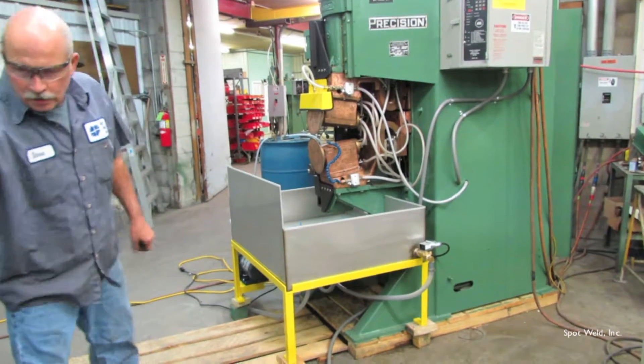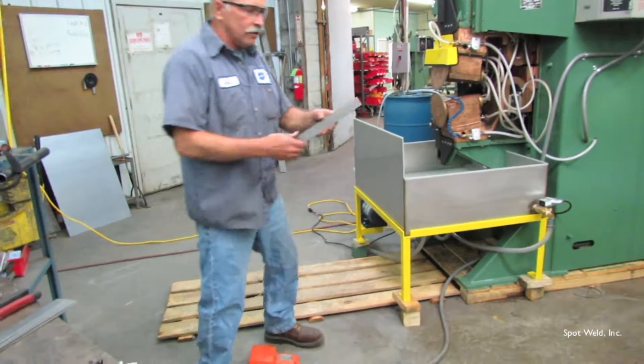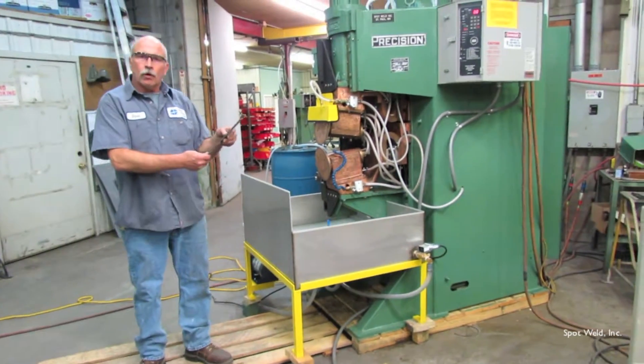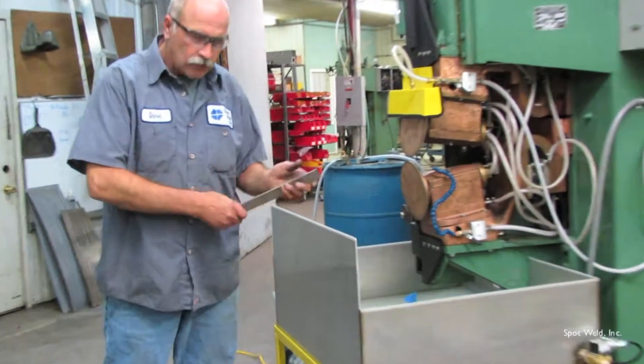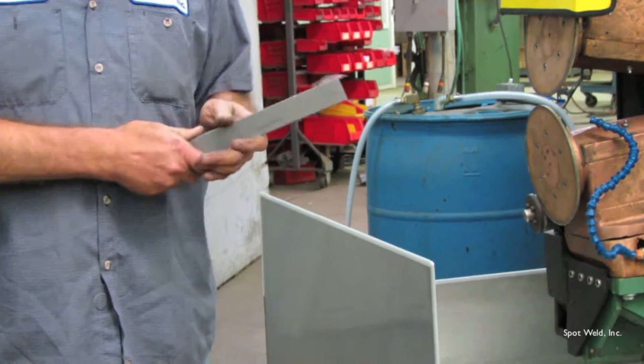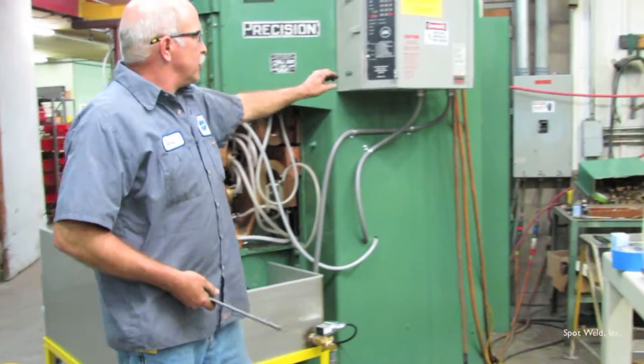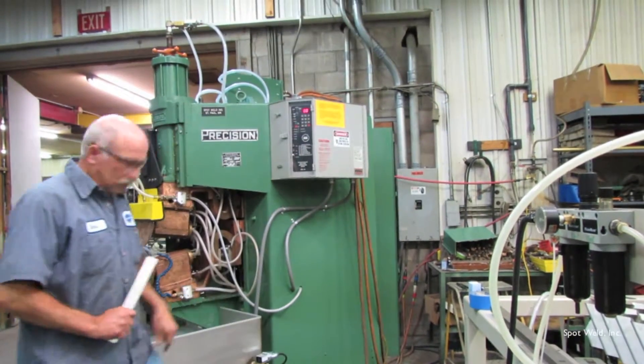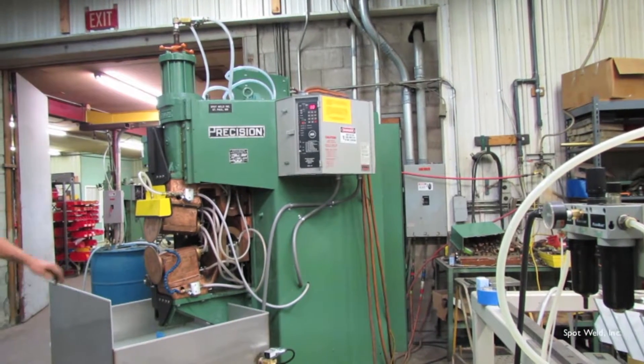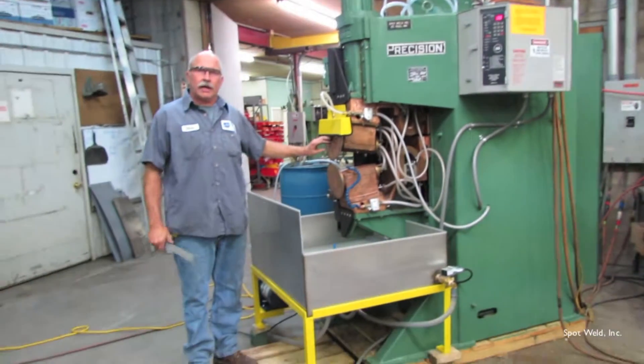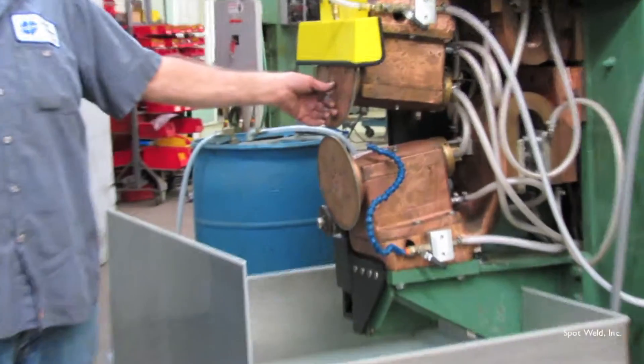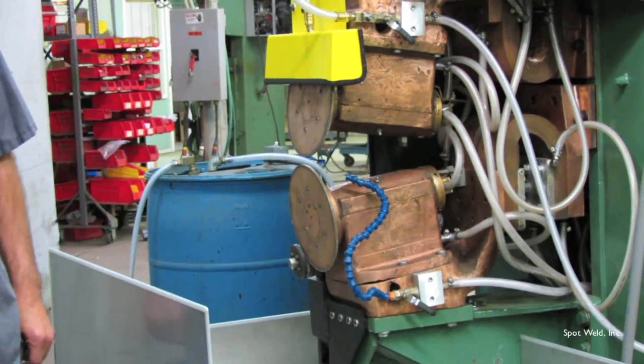We're going to set up for two pieces of stainless steel 074. First thing we're going to do is check our speed. Put the machine at no weld and we are going to count our revolutions per minute so we have the right speed for welding 074 stainless.